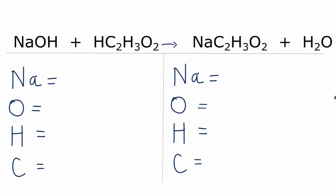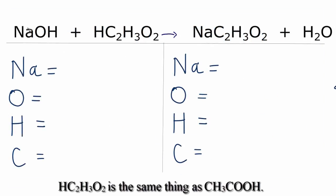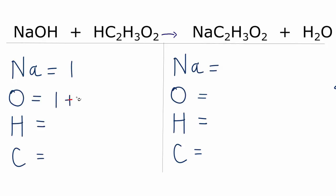So I've written all of the atoms that we have in this equation. Let's count up each atom on each side. We have one sodium atom, oxygens, we have one plus these two oxygens here we need to count, so we have three oxygen atoms. Hydrogens, one, plus we have this hydrogen right here, plus we have these three, so we have a total of five hydrogen atoms. And then carbons, we have the two.